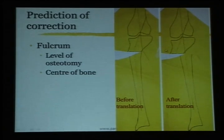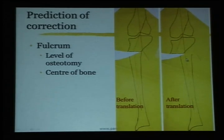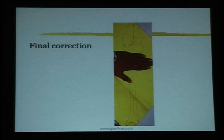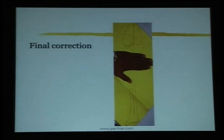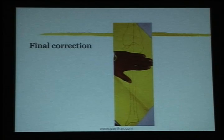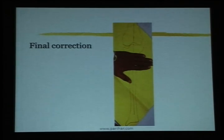It may look anatomically correct but is biomechanically wrong. If you build in the required translation, the axis is perfectly corrected. This looks very abnormal, but if you cover up the area of translation, the bone looks normal — the anatomic incongruity is just a passing phase. Once the child remodels, it comes back to straight.